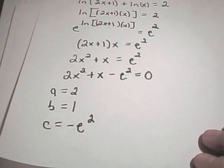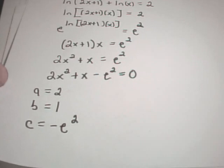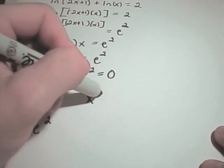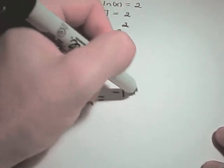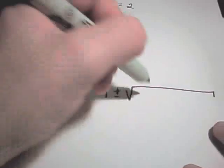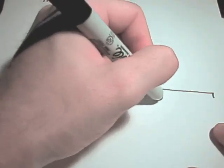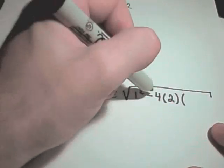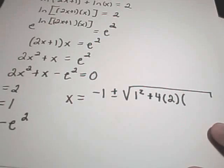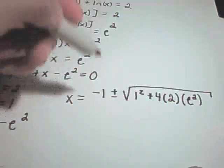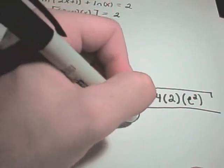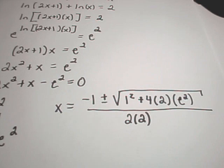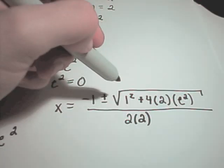If you forgot the quadratic formula, you can visit my website. I've got some problems on there using the quadratic formula. And it says the solutions to this equation will be x equals negative 1 plus or minus the square root of 1 squared minus 4 times 2 times our negative e squared value. The negative will make the term inside positive. And I'll have e squared. And that will all be divided by now 2 times 2.